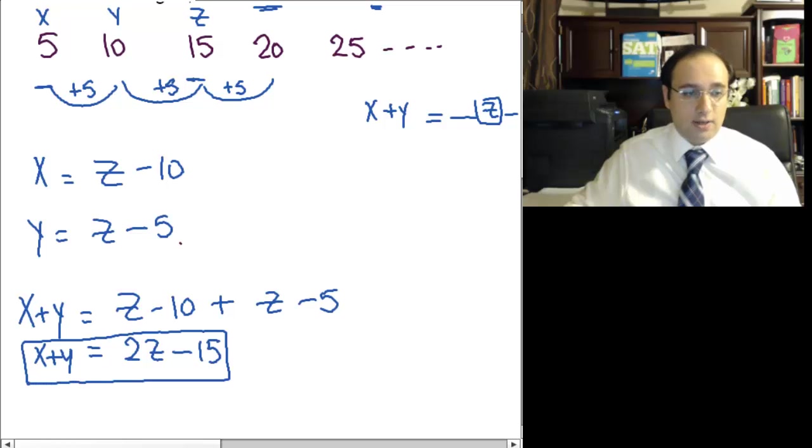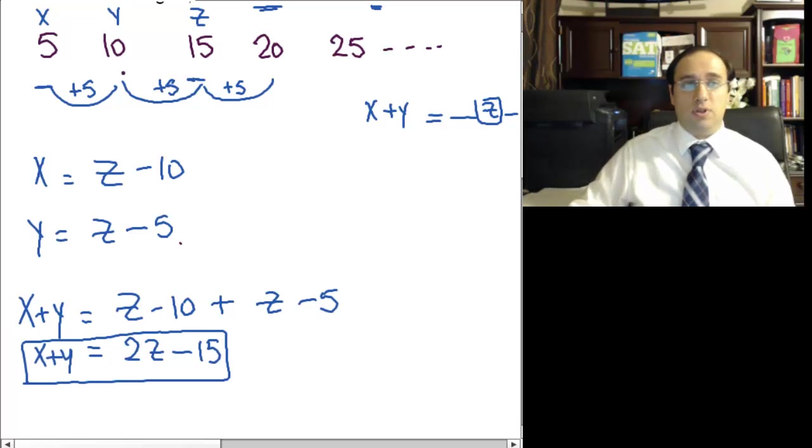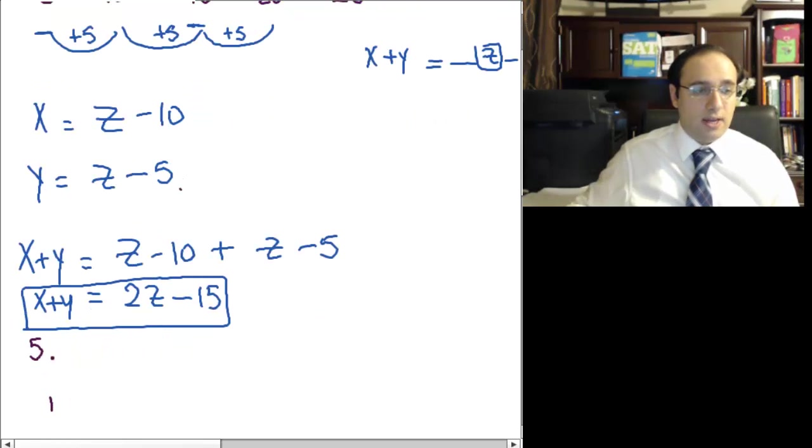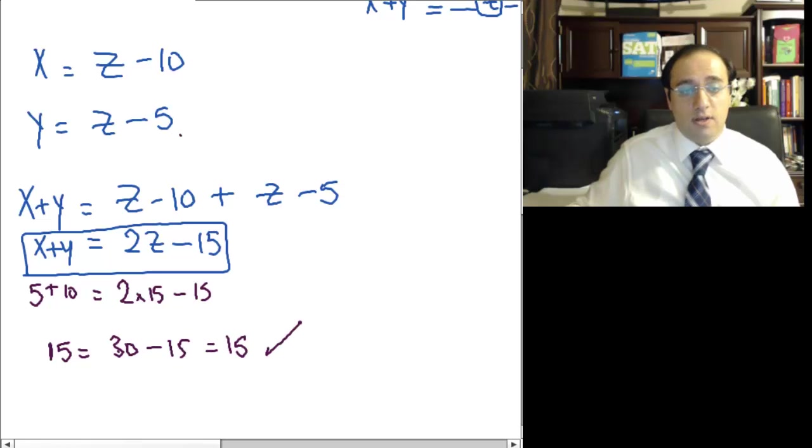Now, let's check that this answer is correct using the information that we assumed at the beginning. If X is 5 and Y is 10, so 5 plus 10 equals 2. What is Z? Z was 15. So 2 times 15 minus 15. What's 5 plus 10? 15. 2 times 15 is 30, minus 15 is 15, so we were right.